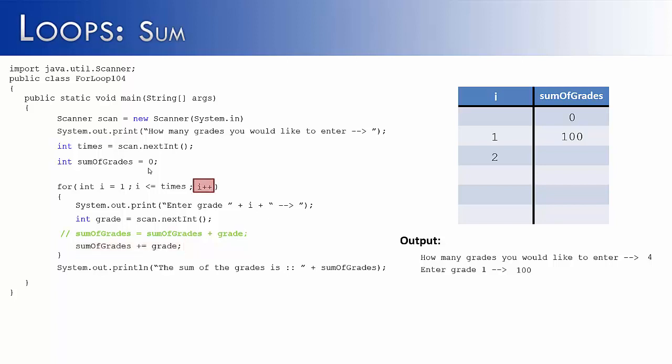Then we increment, i becomes two, check the condition, it's true. Come here, ask the user again for another grade, and this time I've entered in 90. And so when it gets to this line, it's going to take 90 and add it to 100. So 100 plus 90 is 190, so now the sum of grades is 190.